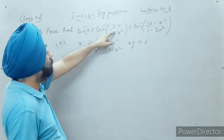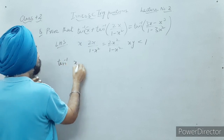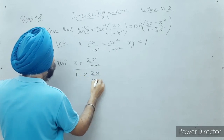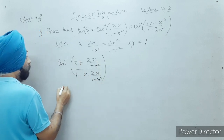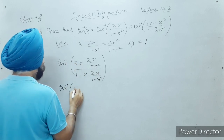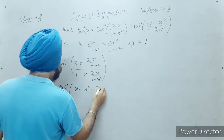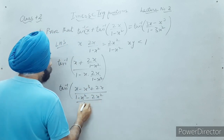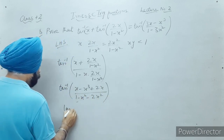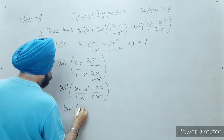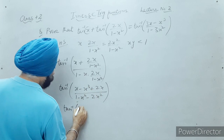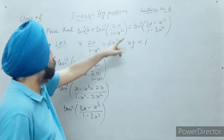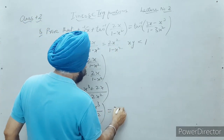Applying the formula, I get tan inverse of [x plus 2x upon (1 minus x²)] divided by [1 minus x times 2x upon (1 minus x²)]. The (1 minus x²) cancels out. This becomes tan inverse of [x plus 2x is 3x minus x³] divided by [1 minus 3x²], which is the right hand side. The condition was xy is less than one, and we verified that 2x² upon (1 minus x²) is less than one, so we apply tan inverse [(x plus y) upon (1 minus xy)].